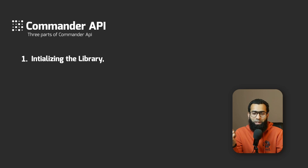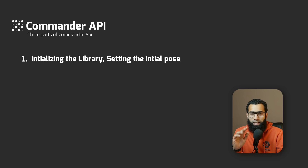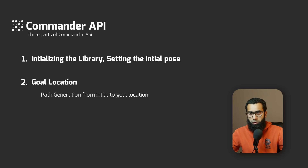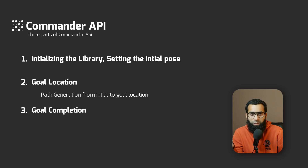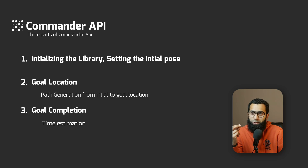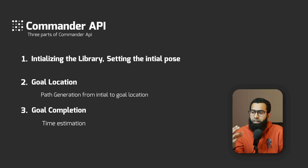Let's divide the Commander API into three parts. The first is to initialize the library and set the initial pose of the robot. The second part is to set a goal location so it can generate a path from the initial position to the goal. The third part is important: you wait for goal completion. It seems useless, but you can preempt it and find out how much time it will take to reach that point — like a countdown — and then say that if it does not reach within 10 seconds, launch a recovery behavior. Give a goal, make it reach that goal in a defined time, and it will also give us a counter.